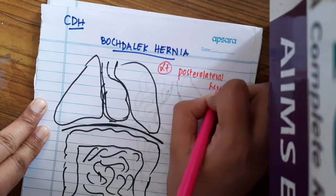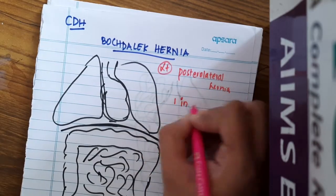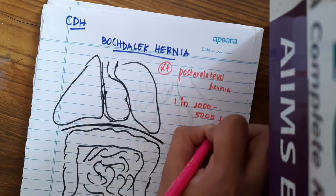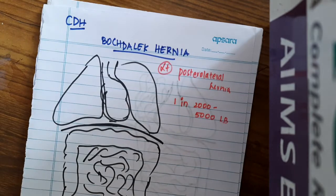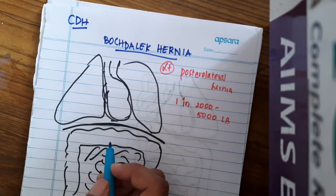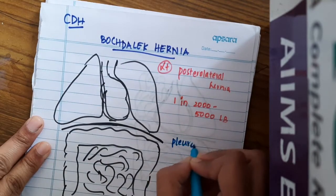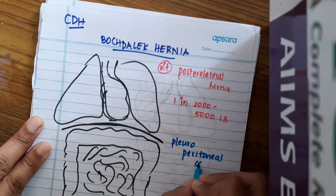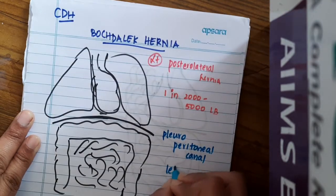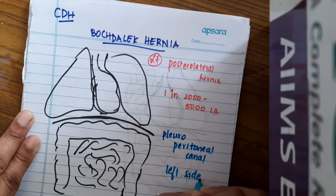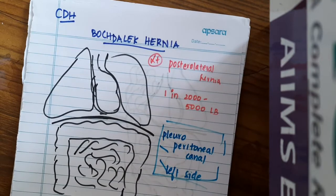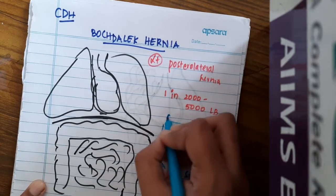It is most commonly seen in 1 in 2000 to 5000 live births. The main cause of this Bochdalek hernia is the failure of fusion of the pleuroperitoneal canal. We have a pleuroperitoneal canal through which the diaphragm is derived. So if there is failure of fusion of this pleuroperitoneal canal on the left side, then this will lead to Bochdalek hernia.